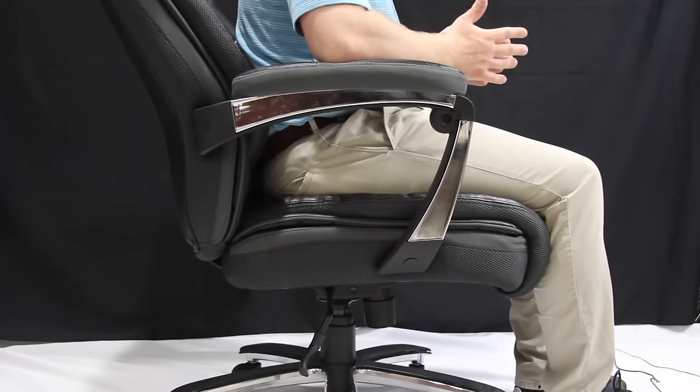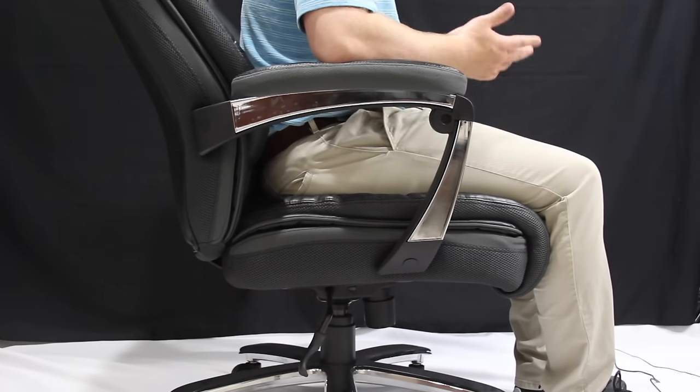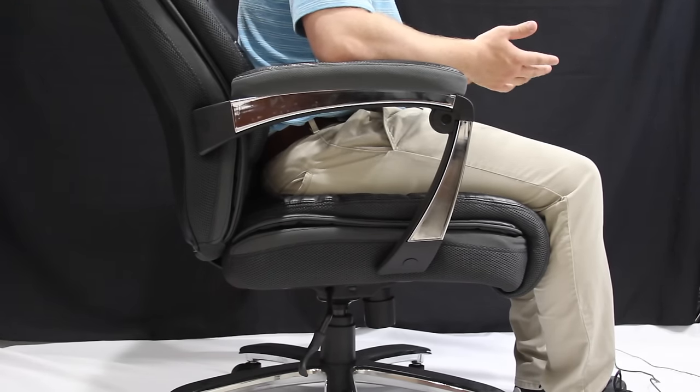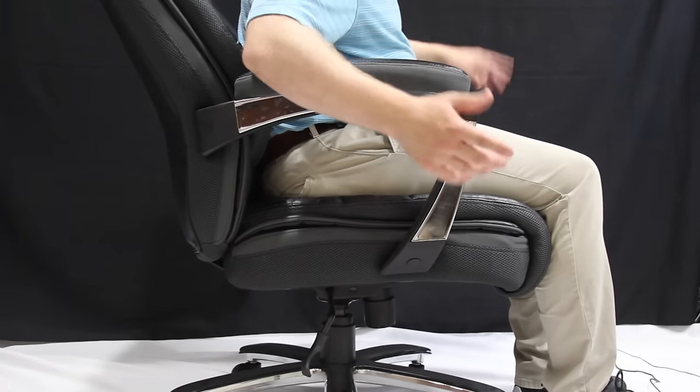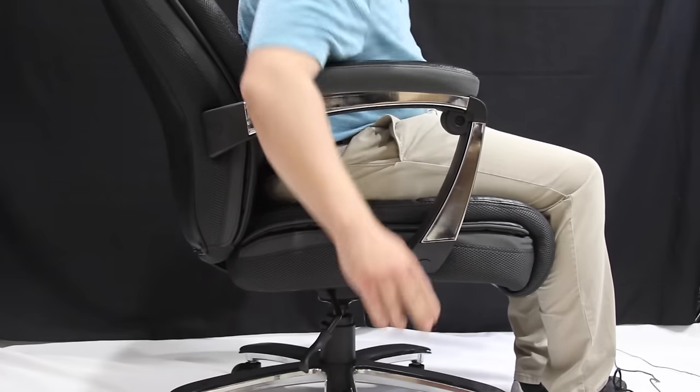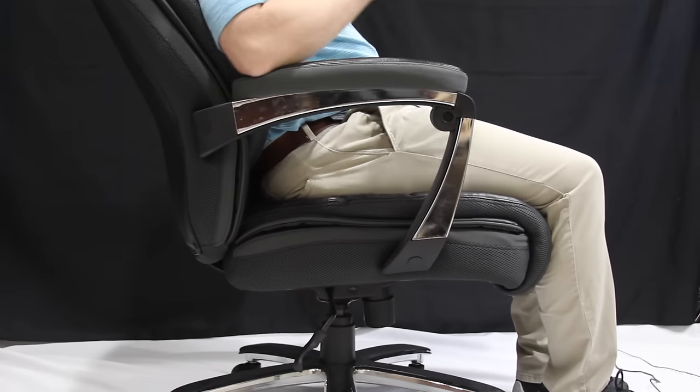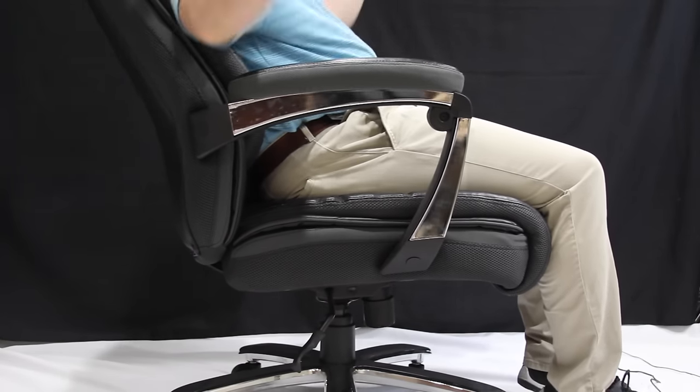Now there's another adjustment on these chairs that is very important and that's the tilt tension adjustment. When you get a chair, you might be frustrated because you go to lean backwards and it does not lean. You'll check the tilt lock and make sure it's released. It is. But then when I push back, this is not going anywhere.